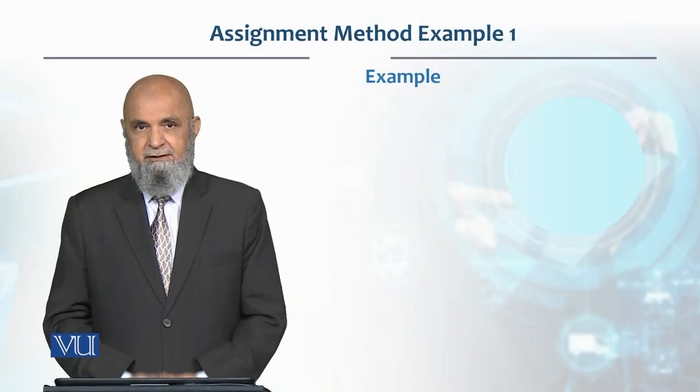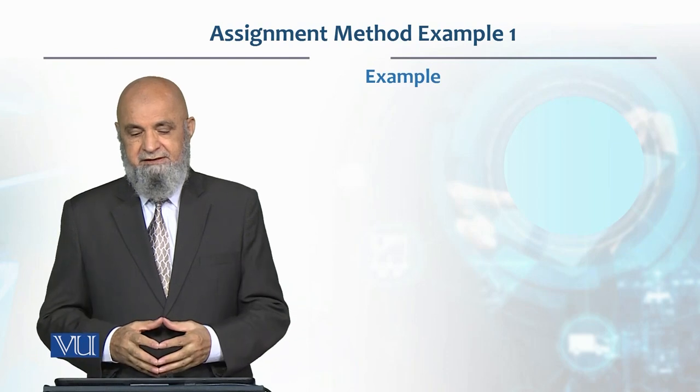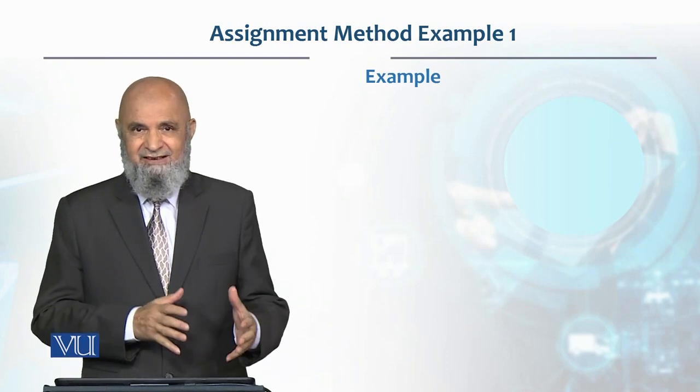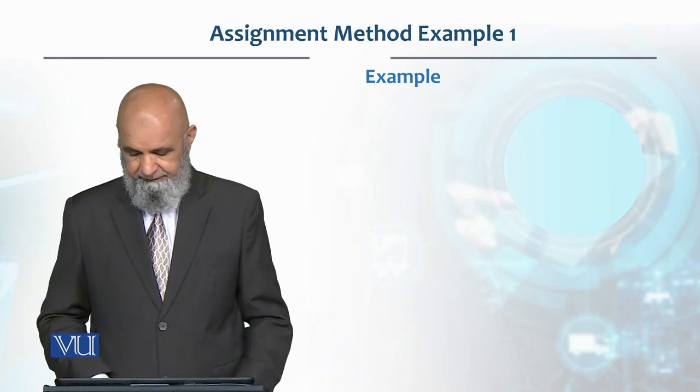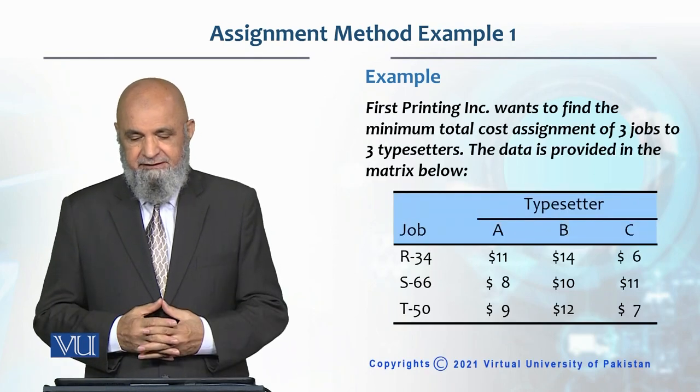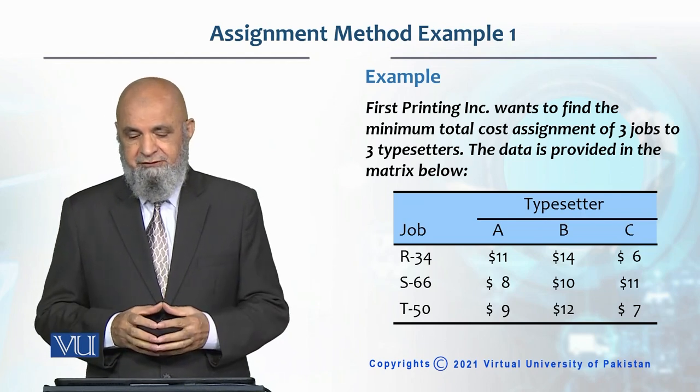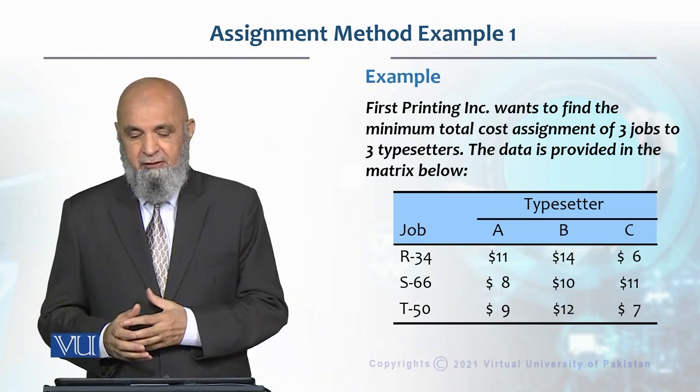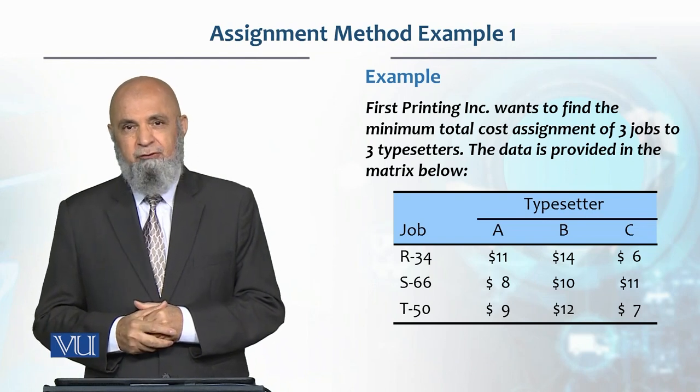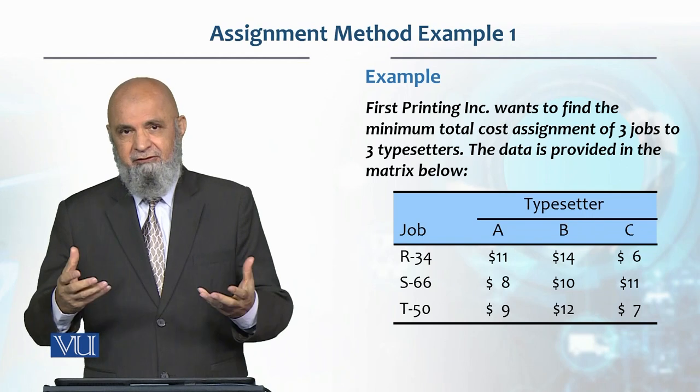Let's look at an example of how we use this assignment method to assign tasks to different resources. Let's say First Printing Incorporated company wants to find the minimum total cost assignment of three jobs to three typesetters, three resources.